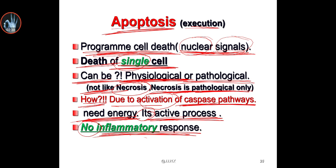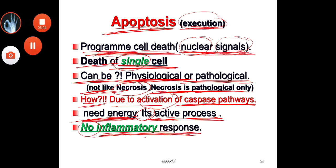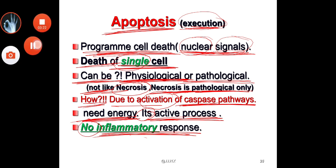Sometimes we call apoptosis 'execution' — like a programmed suicide. When cells cannot sustain themselves, for example if there is no sufficient food or supplies, the cell is sent to execution. It is essentially cellular suicide, or 'intihar' as we say.